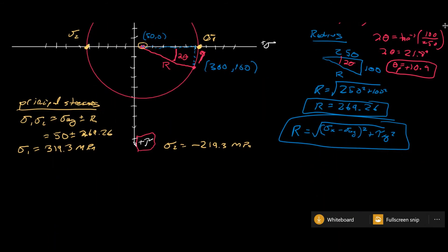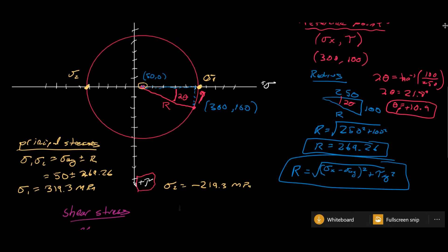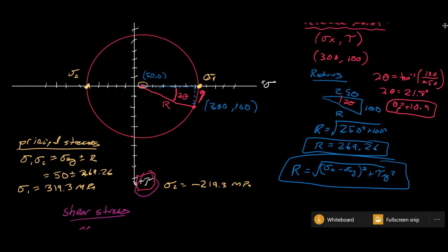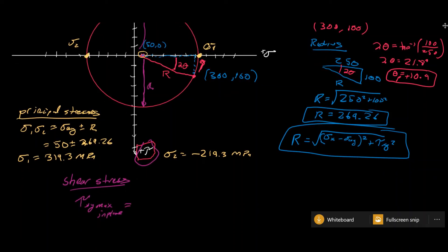We also want to find the maximum in-plane shear stress, τxy max. On Mohr's circle, the maximum shear stress is at the top or bottom of the circle — directly above or below the center. That value is simply equal to the radius, so τxy max = 269.26 megapascals.